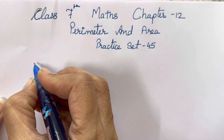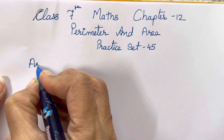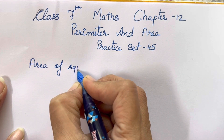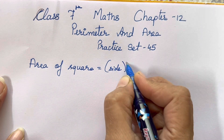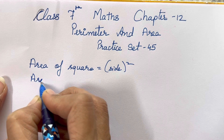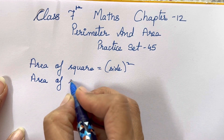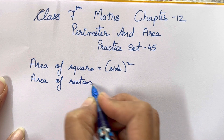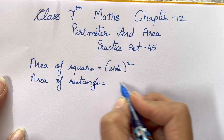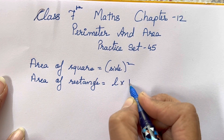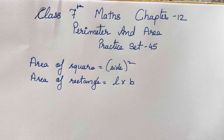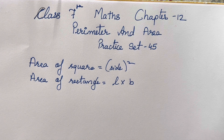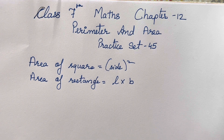So two basic formulas that we are going to study today are: area of a square, which is side squared, and area of a rectangle, which is length into breadth. You can write the abbreviations or in full form. These two formulas we are going to study and solve the examples related to them.